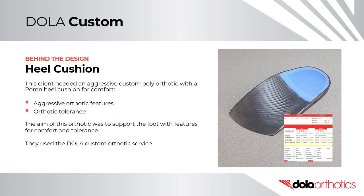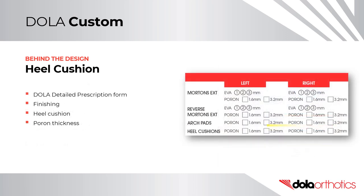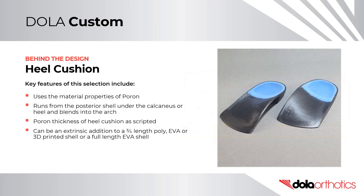Behind the Design – Heel Cushion. This client needed an aggressive custom poly orthotic with a pour-on heel cushion for comfort. The aim was to support the foot with features for comfort and tolerance included. They used the Dollar Custom Orthotic Service and selected the pour-on thickness for the heel cushion from the finishing section of the Dollar detailed prescription form. Key features include the cushioning properties of pour-on.